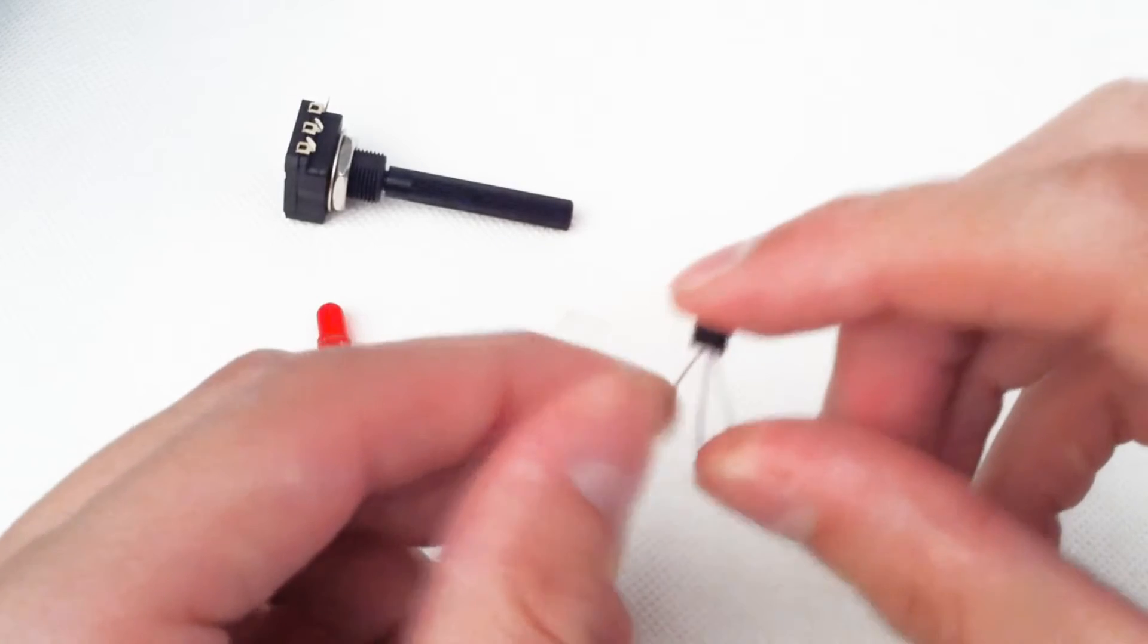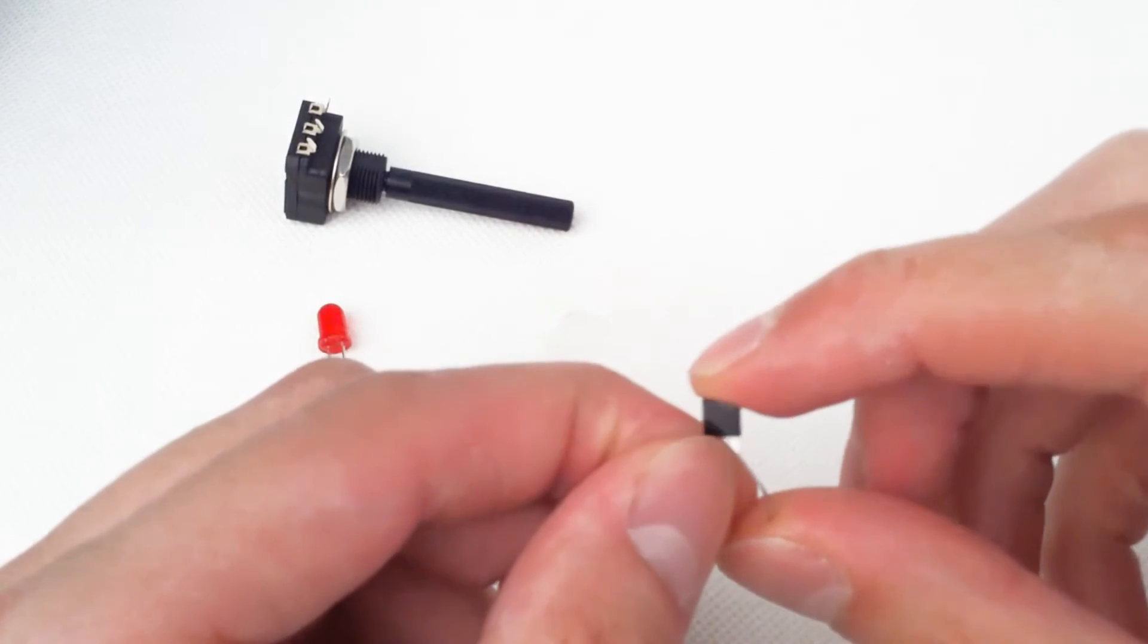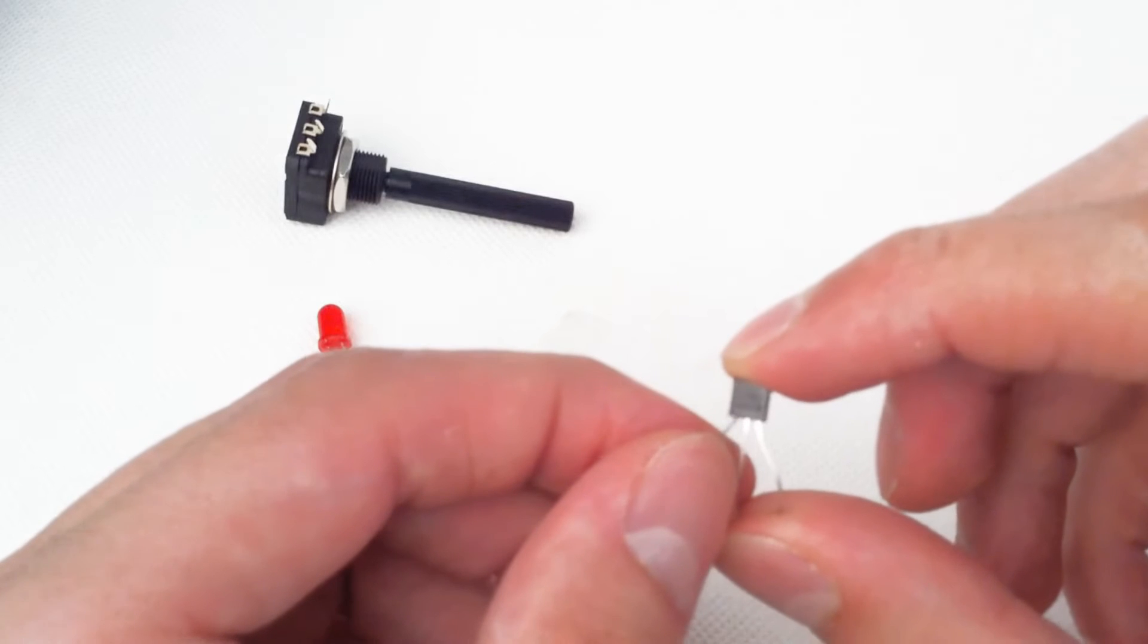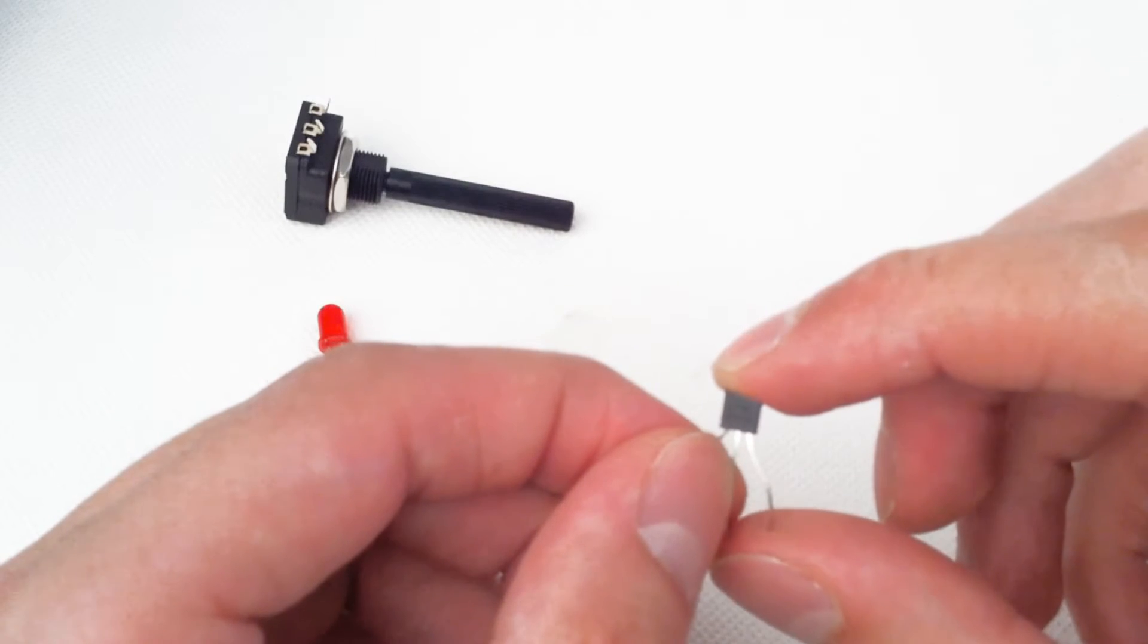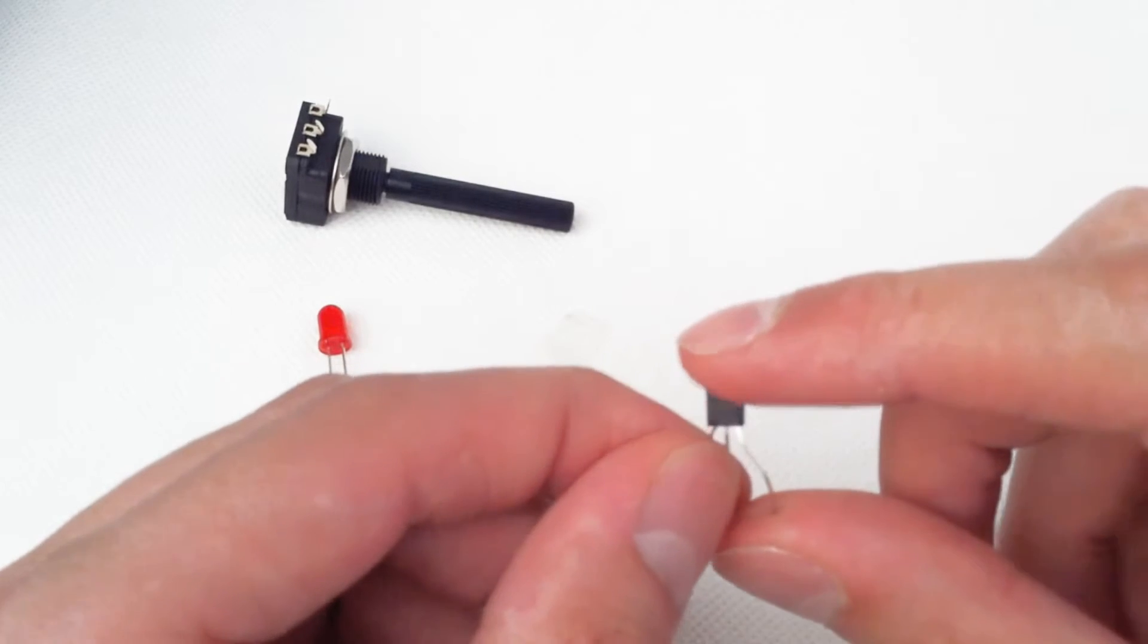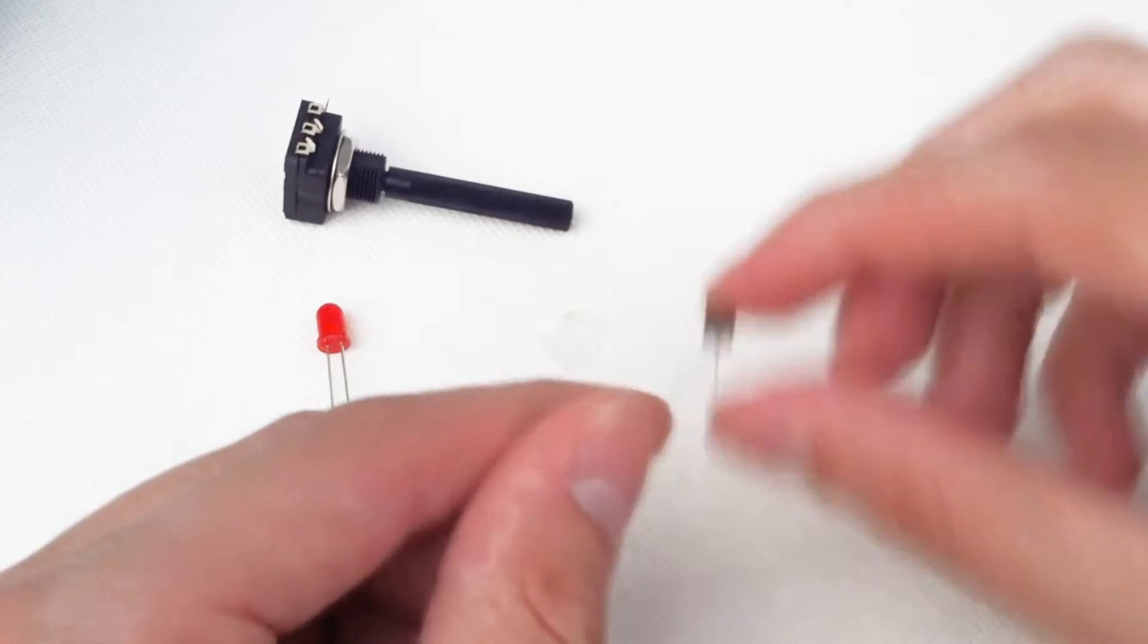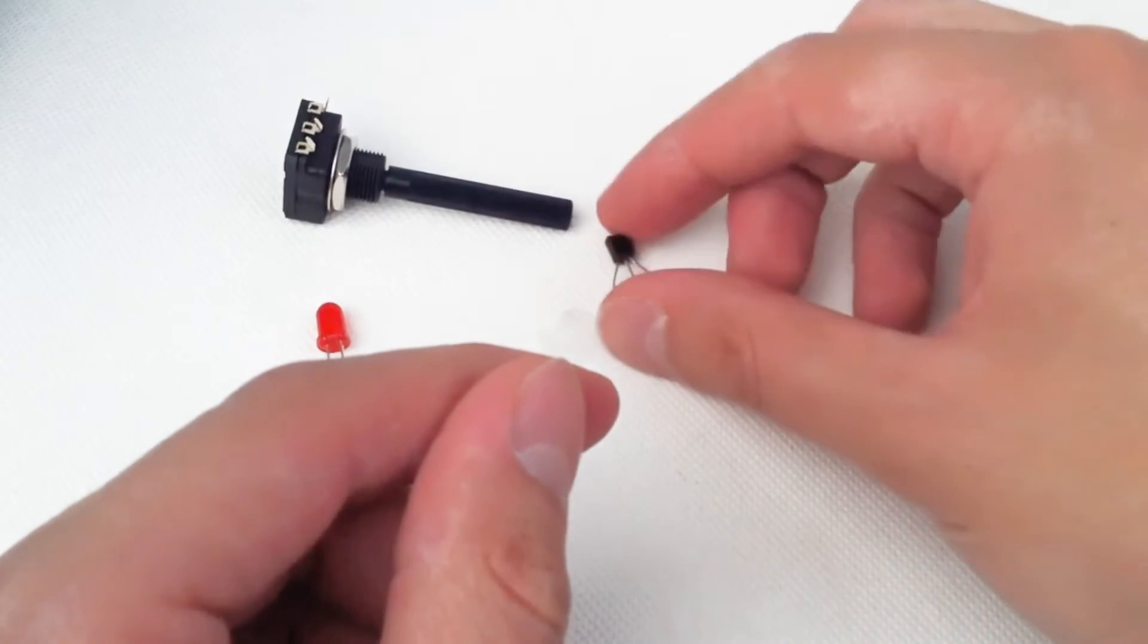Our BC547 transistor - we've bent the legs out a bit to make it easier to put in. Sometimes different transistors can come in the same external package like this, so be careful to read the number on the front. It should say BC547.